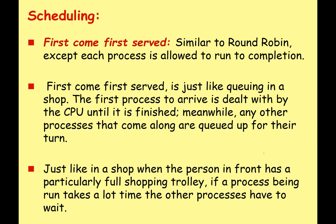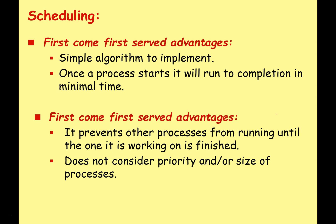The next algorithm is first come first served — similar to round robin except each process is allowed to run to completion. First come first served is a lot like queuing for a shop: the first process to arrive is dealt with by the CPU until it is finished, while any other processes that come along are queued up to wait for their turn. Just like in a shop when the person in front has a particularly full shopping trolley, if the process being run takes a lot of time then all the other processes have to wait.